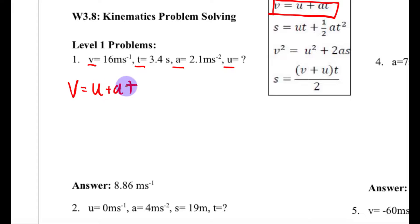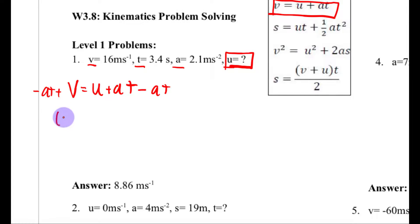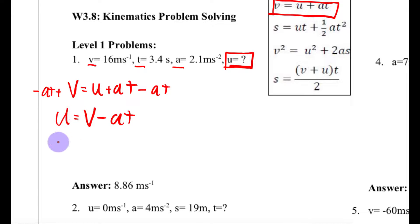The next step of the GUESS method is to isolate the thing we're trying to solve for, which in this case is U. Isolating U is pretty easy here — I'm just going to subtract AT from both sides. So when I do that I get U is equal to V minus AT. Now I just need to plug this in.